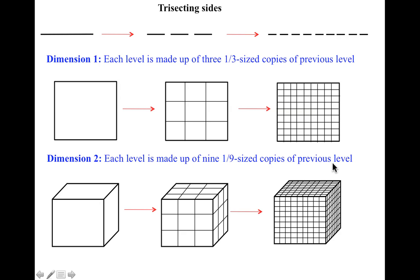And we can trisect the cube. That is by cutting each side into three equal parts. And for the cube, each level is made up of 27 one-twenty-seventh size copies of the previous level. I think you can see the general pattern.